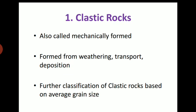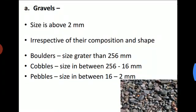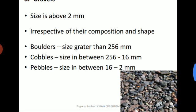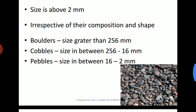Further classification of clastic rocks is based on average grain size. The first type is gravel — size above 2 mm, irrespective of composition and shape. Gravel is also classified by size: boulders, greater than 256 mm; cobbles, size between 256 to 16 mm; and pebbles, size between 16 to 2 mm.